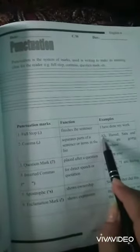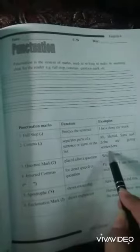Comma. Function: separate parts of a sentence or items in a list. Just like Ali, Hamid. These are two separate parts of the sentence. For example, Sarah and Zohar are going somewhere.